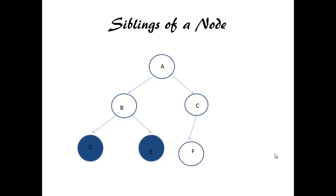Siblings. Siblings are the nodes belonging to same parent. D, E is a child for B. B, C are siblings for A.